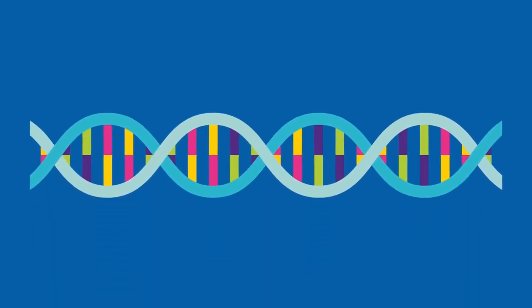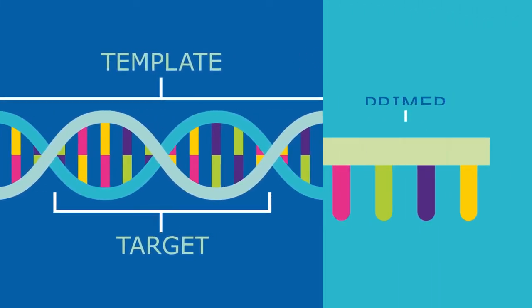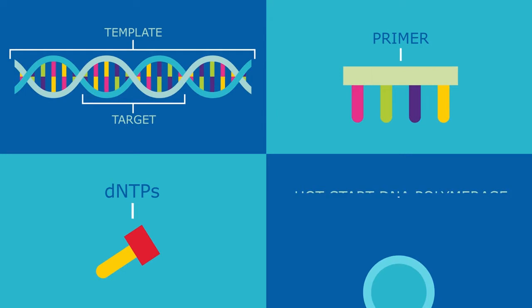In a PCR reaction, you have your template, which contains the target sequence that you are interested in. You also need primers, DNTPs, and Hot Start DNA polymerase of your choosing.